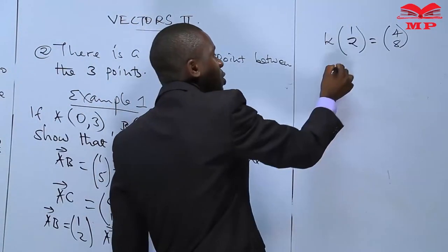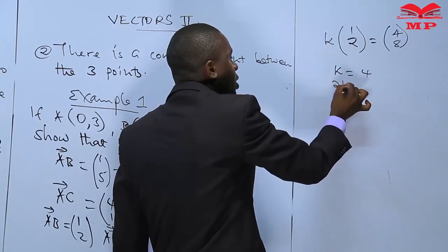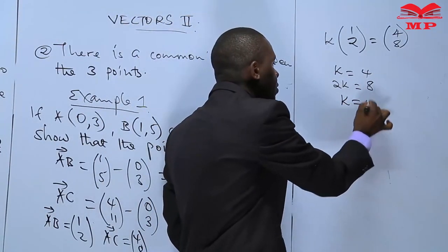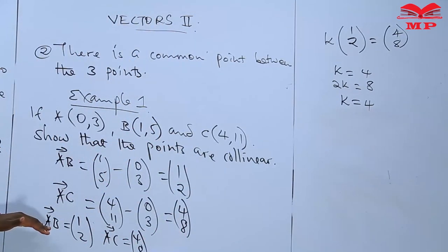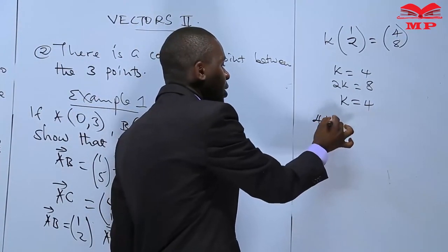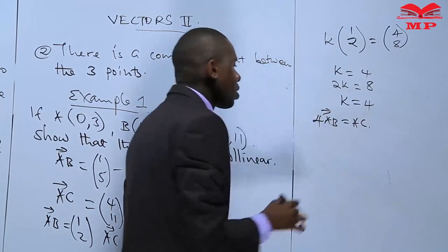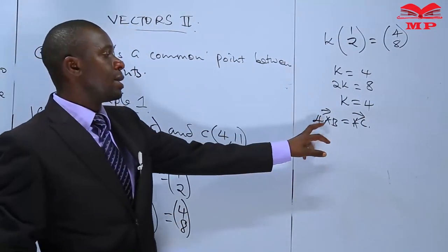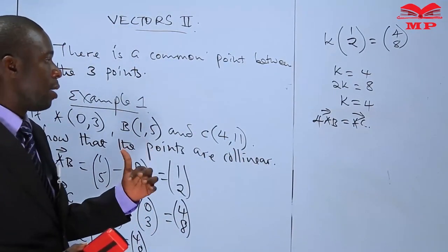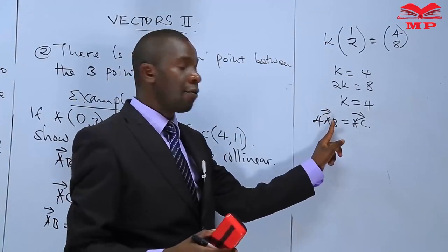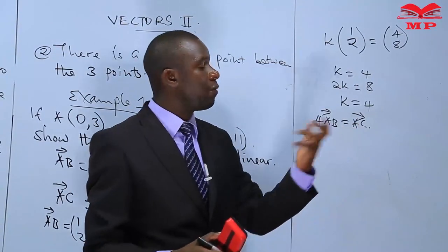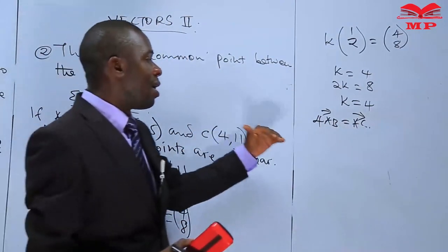We get k times 1 equals 4, and k times 2 equals 8. It is obvious that k equals 4. So multiplying 4 by vector AB gives us vector AC — that is, 4·AB = AC. This means vector AB is parallel to vector AC. They are collinear because both vectors share the common point A.